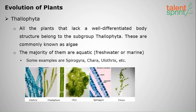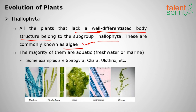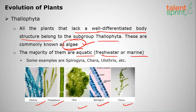Thallophyta consists of plants that don't have well-organized cells and tissues — they lack a well-differentiated body. This group is commonly called algae and the majority are aquatic. Examples include Spirogyra, Ulva, Chara, Cladophora, and Ulothrix.